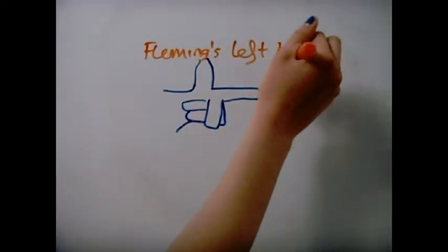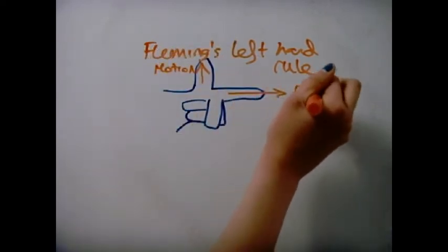Fleming's left-hand rule tells you where the wire would move corresponding to the field lines and direction of current.